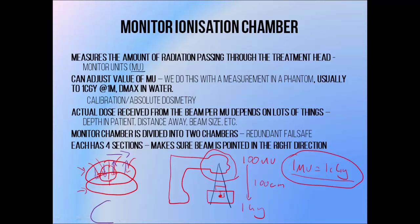The second chamber is divided up in a similar way but at a 90-degree angle to the first, so it's able to pick up changes in the beam in the other direction. If the signal in two regions goes up and the signal in the opposite two regions goes down, that means the beam has moved, and the machine is able to steer it back on course. So the monitor chamber makes sure the patient gets the right amount of radiation and makes sure that the beam is pointed in the right direction.